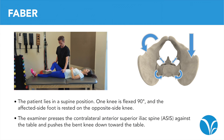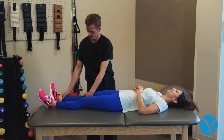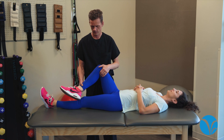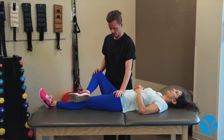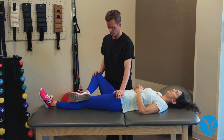For the FABER test, the patient lies in a supine position. One knee is flexed 90 degrees and the affected side foot is rested on the opposite side knee. The examiner presses the contralateral anterior superior iliac spine against the table and pushes the bent knee down toward the table. The test is considered positive if the patient feels pain in the SI joint on the side where the knee is flexed. Pain in the buttocks is suggestive of SI joint dysfunction, whereas pain in the inguinal region may indicate hip pathology.